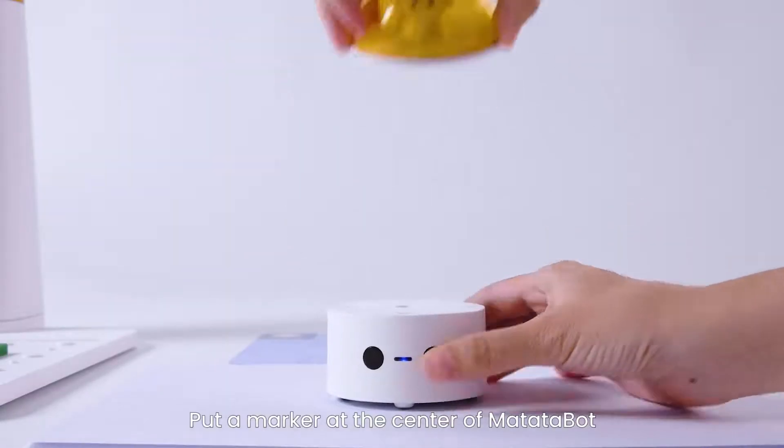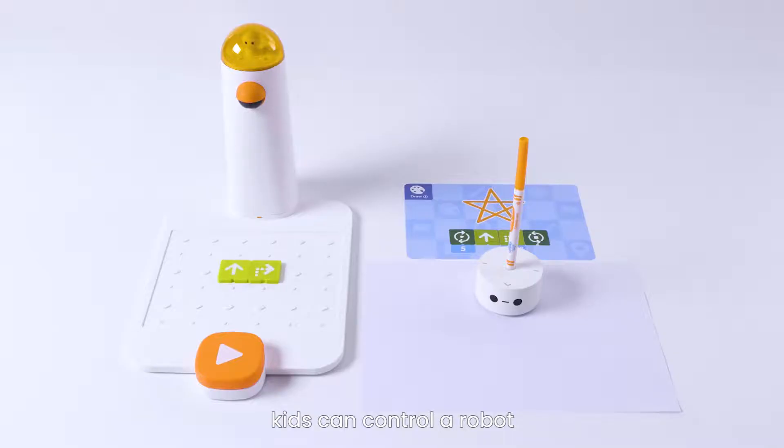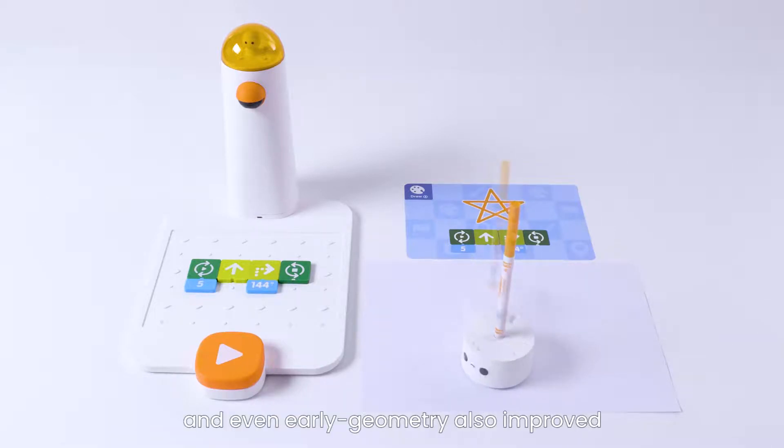Put a marker at the center of MatataBot. By moving with different angles, kids can control a robot to draw different creative shapes. Their skills of dimensional orientation, shape cognition, and even early geometry also improve.